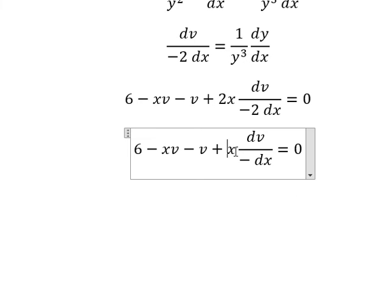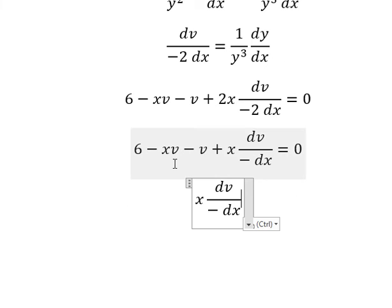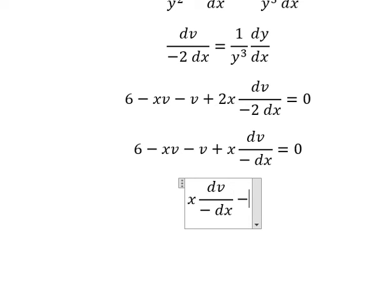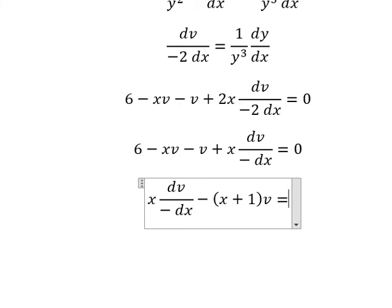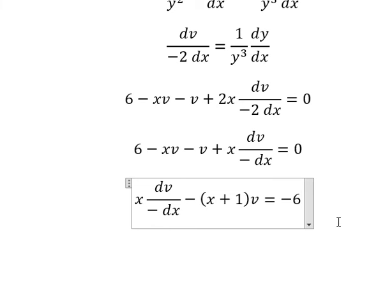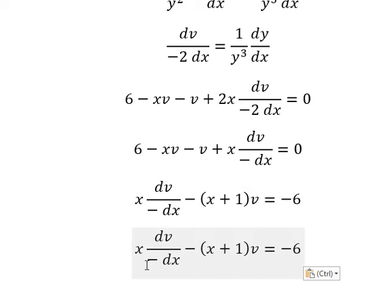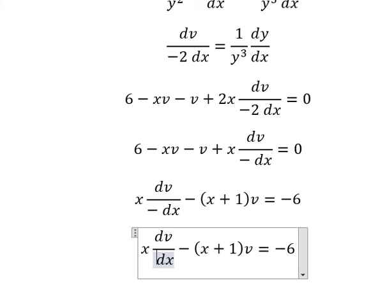Next, I will arrange this a bit. We have v and v, so we can factor. When I put 6 on the right, we have negative 6. We simplify the negatives on both sides, so this becomes positive.